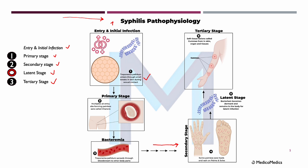Left untreated, we then move into the secondary stage. We will see widespread symptoms, including skin rashes, flu-like symptoms, and swollen lymph nodes. We will also see a very characteristic symptom of secondary stage syphilis: rash on palms and soles. This is a hallmark sign of secondary syphilis — if you see rashes on a patient's soles and palms, think syphilis.